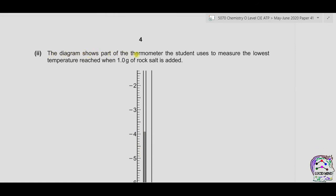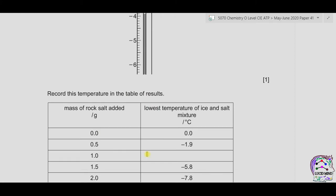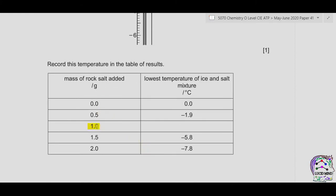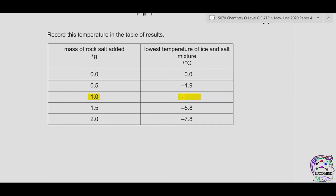For part two, the diagram shows part of the thermometer the student uses to measure the lowest temperature reached when one gram of rock salt is added. We need to record this temperature in the table of results. Looking at the thermometer reading: 3, 3.5, then 6, 7, 8, 9 — the temperature is negative 3.9 degrees centigrade. So we can write −3.9 in place of temperature for one gram of rock salt.